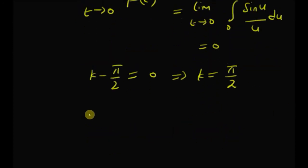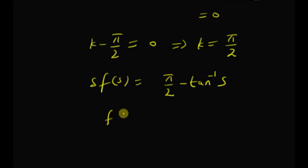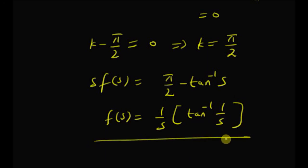Therefore, s times F of s is equal to pi by 2 minus tan inverse of s, which can be written as tan inverse of 1 by s. Therefore, the Laplace transform of the sine integral is 1 by s into tan inverse of 1 by s. Thanks for watching.